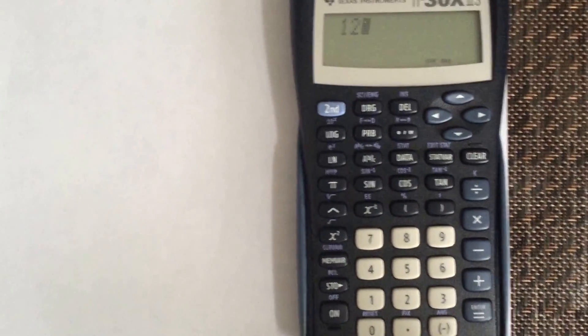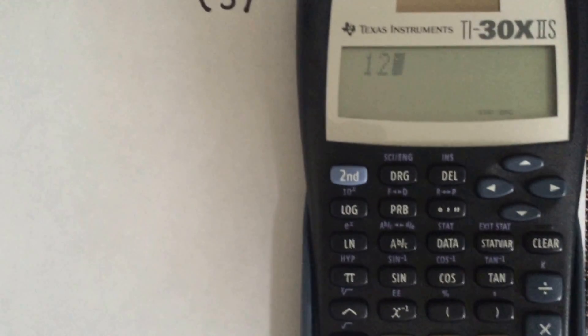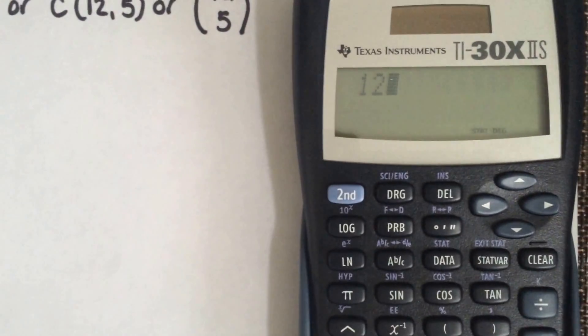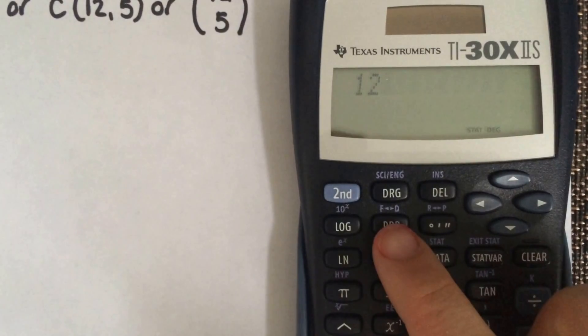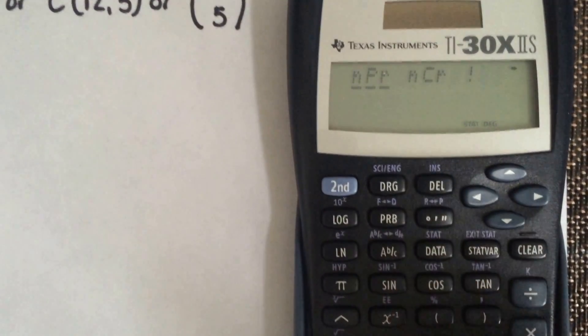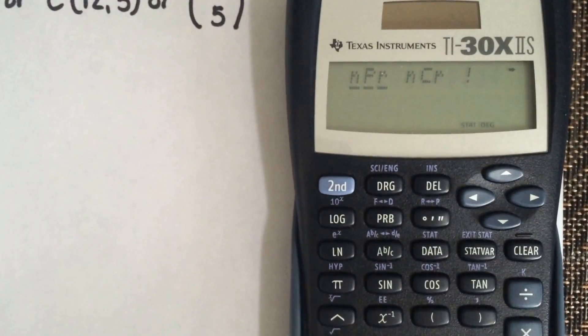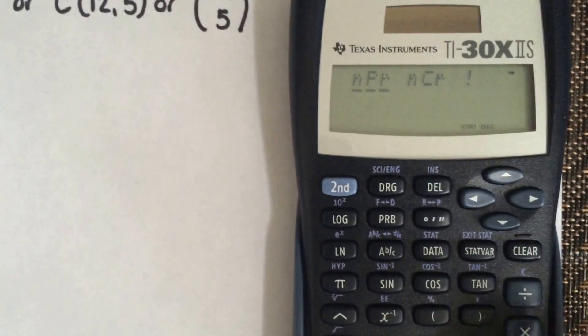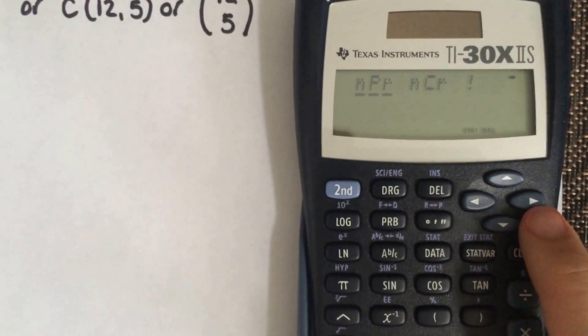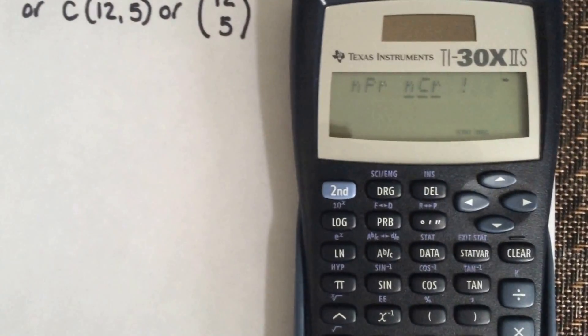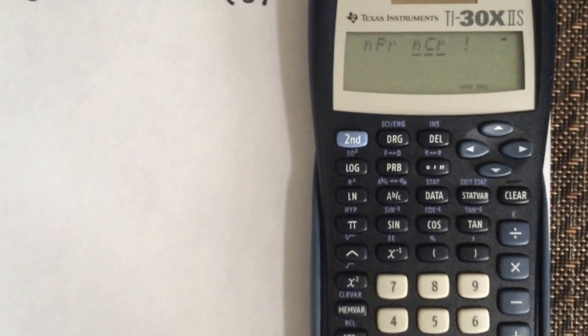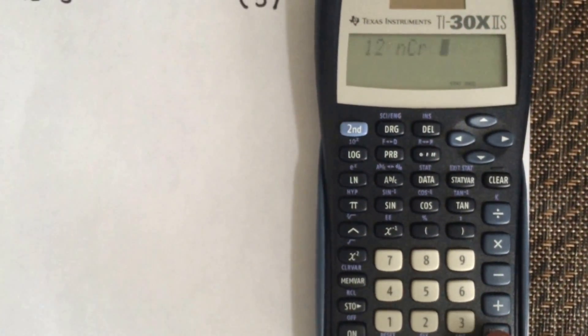Then you're going to see the probability button. You're going to want to select that and it's going to show you two options, either NPR and NCR. Since we're using combination, you can scroll with this arrow button to the right, select NCR, and hit equals right there.